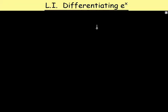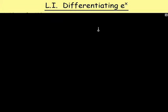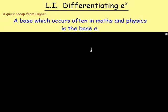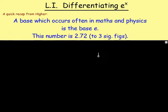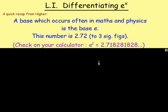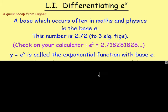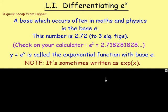Remember, e to the power of x is our exponential function with a base e, and it's something we came across in higher. Recap from higher: a base that often occurs in maths and physics is the base e, and e is the number 2.72 and so on — to three significant figures, it's just 2.72. If you put e into the calculator and press equals, it will give you 2.718281828 and so on. E to the power of x is your exponential function with base e, and sometimes it is written exp to the power of x.